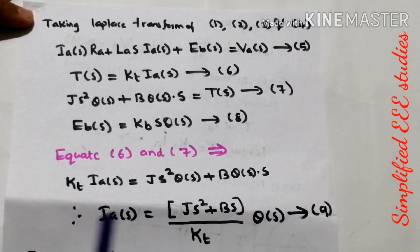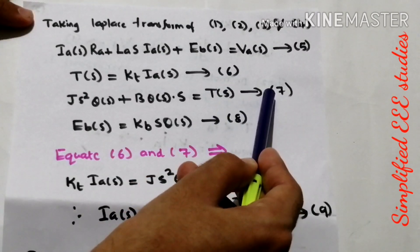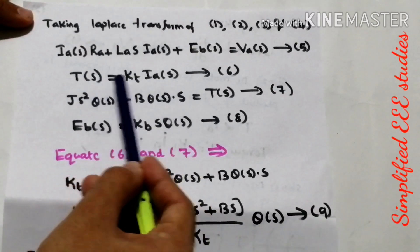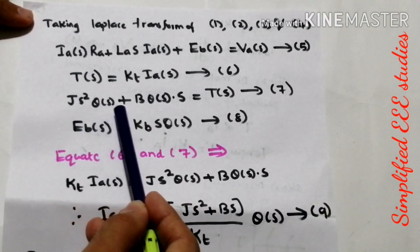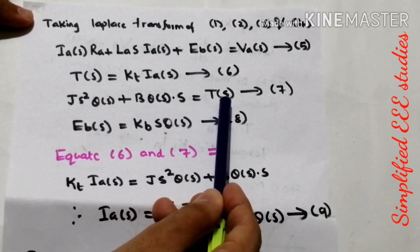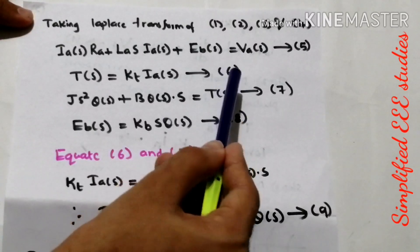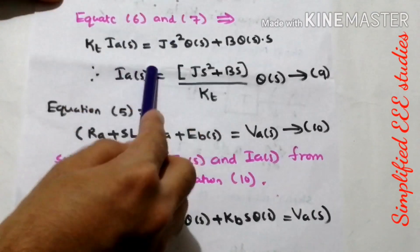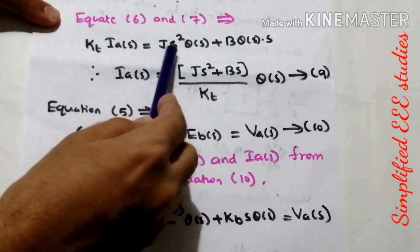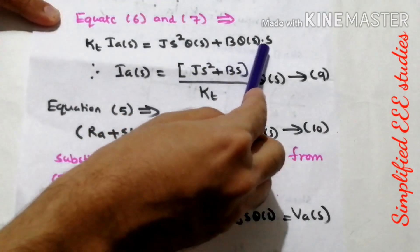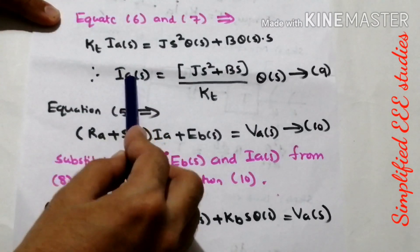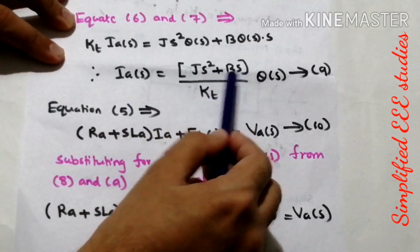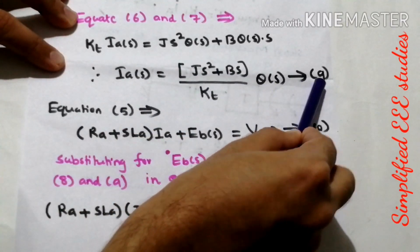Now consider equations 6 and 7. By equating them — since both equal T(S) — we get: Kt·Ia(S) = J·S²·θ(S) + B·S·θ(S). Separating the value of Ia(S): Ia(S) = (J·S² + B·S) / Kt · θ(S). Please call this equation 9.